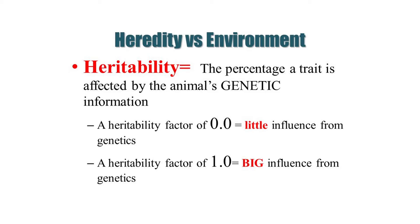If it's 0.5, it's basically a 50% chance of something being inherited. A value close to 0 means genetically there's almost no influence, and if it has a heritability close to 1, it has a big influence. Obviously 0.75 is much greater than 0.25 for a characteristic to be passed on.